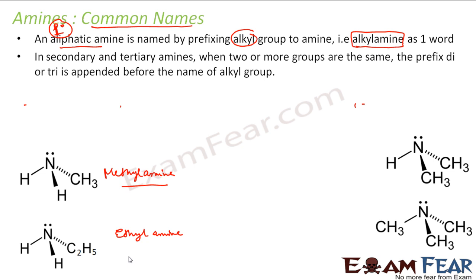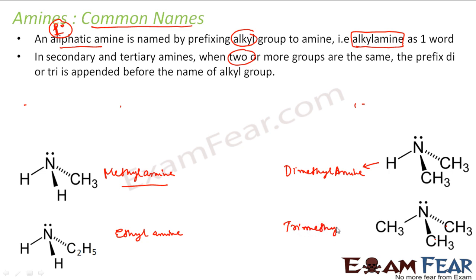For secondary and tertiary amines, if two or more groups are the same, we use the di- and tri- prefix. For example, if you see there are two methyl groups attached, we'll call this dimethylamine. If there are three methyls, we'll call this trimethylamine. So dimethylamine is a secondary amine and trimethylamine is a tertiary amine.